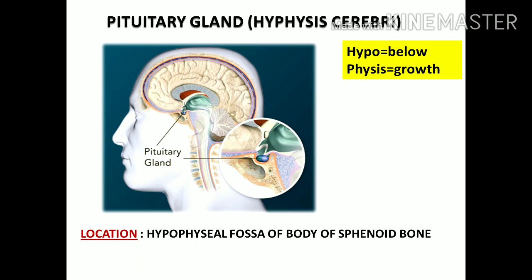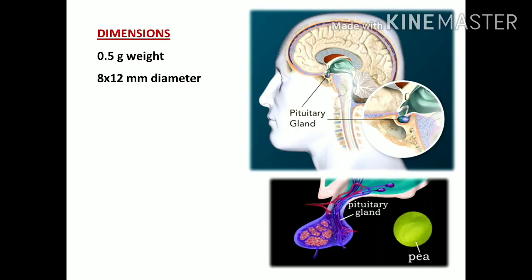The pituitary gland is something like a tiny growth from the base portion of the brain — from the inferior aspect of the brain — which is why it is also called hypophysis cerebri. This tiny gland is closely related to the sphenoidal air sinus, which lies just below the pituitary gland within the body of the sphenoid. Another closely related structure is the optic chiasma.